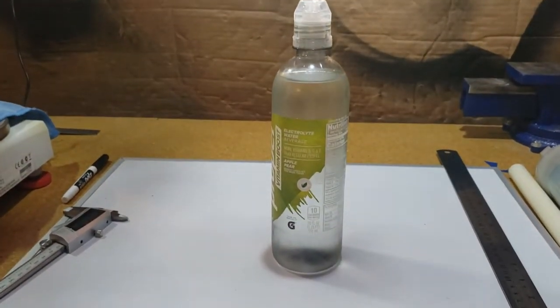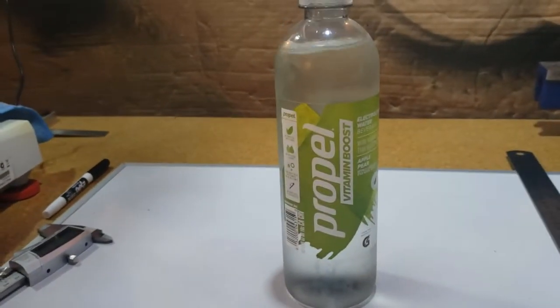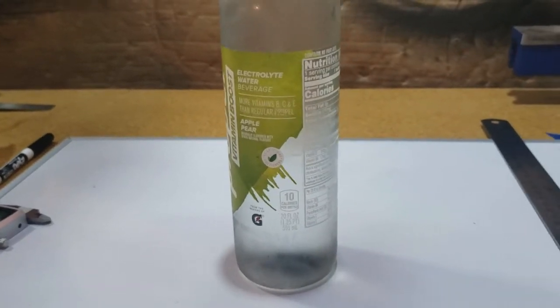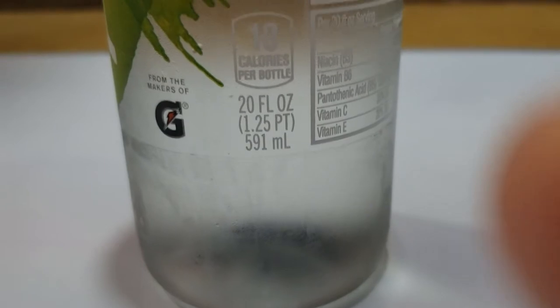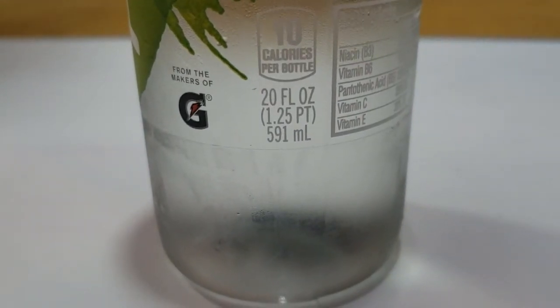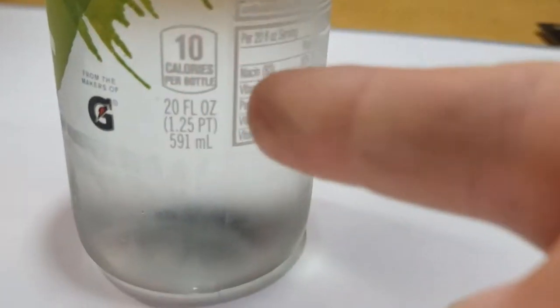Let's take a look at this bottle of Propel water. If we look carefully at the label, it tells us that this container holds 20 fluid ounces. That's the English system of measuring volume. We're interested in the bottom number right there, the 591 milliliters.